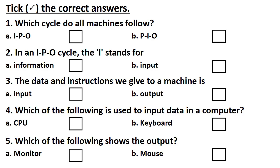Next question: In an IPO cycle, the I stands for? Answer is Option B: Input. Question number 3: The data and instructions we give to a machine is? Answer is Option A: Input.